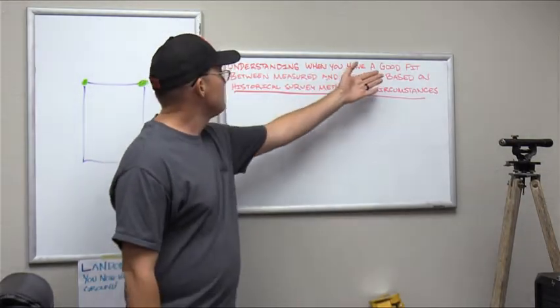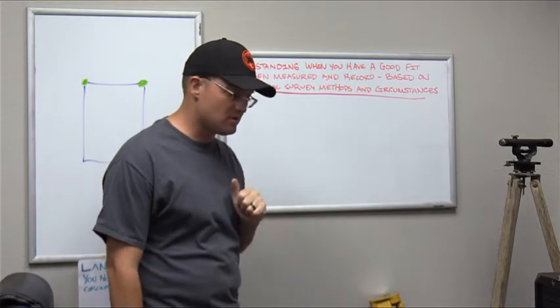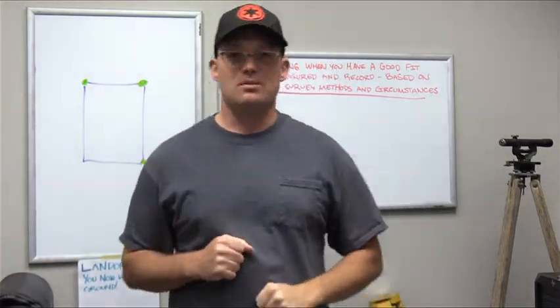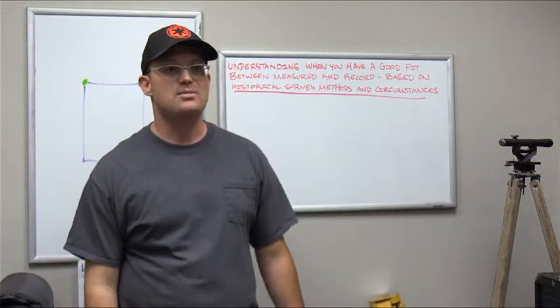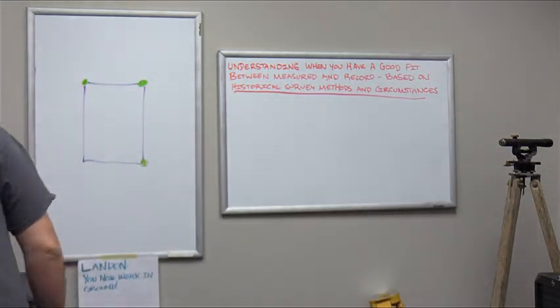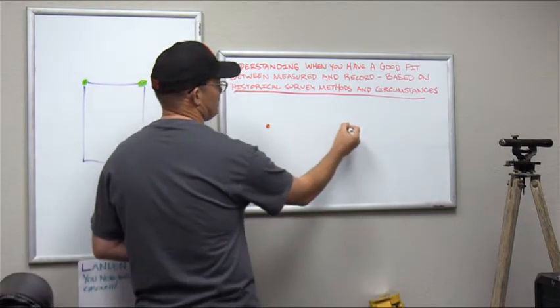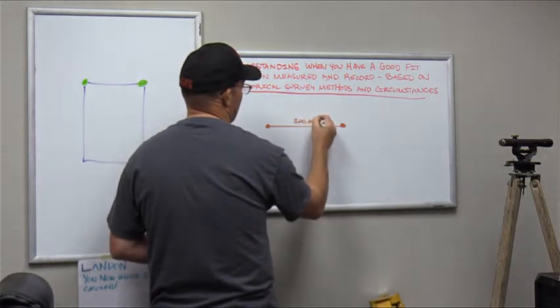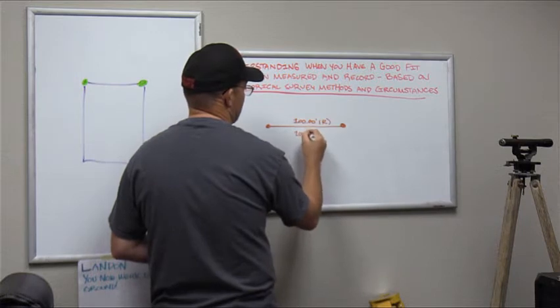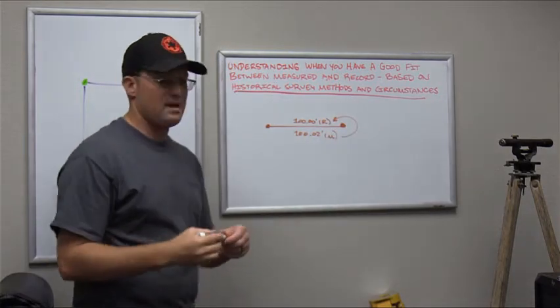The third reason is historical measurements don't always fit together even within themselves. So you can have two historical surveys, they don't fit. And then sometimes the historical surveys don't fit with the measurements. So nothing fits. So what do you do when you have historical measurements that don't fit together? Surveyors need to understand the fit between measure and record is really important. It's a key part of the boundary resolution process.